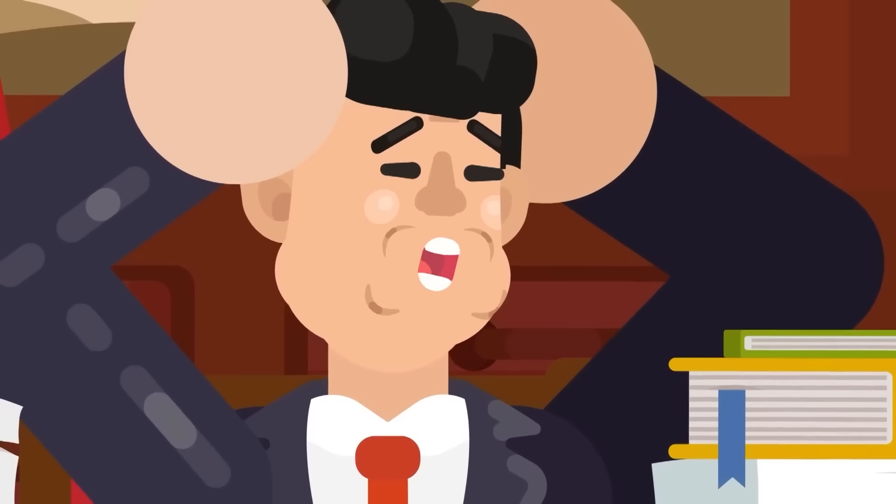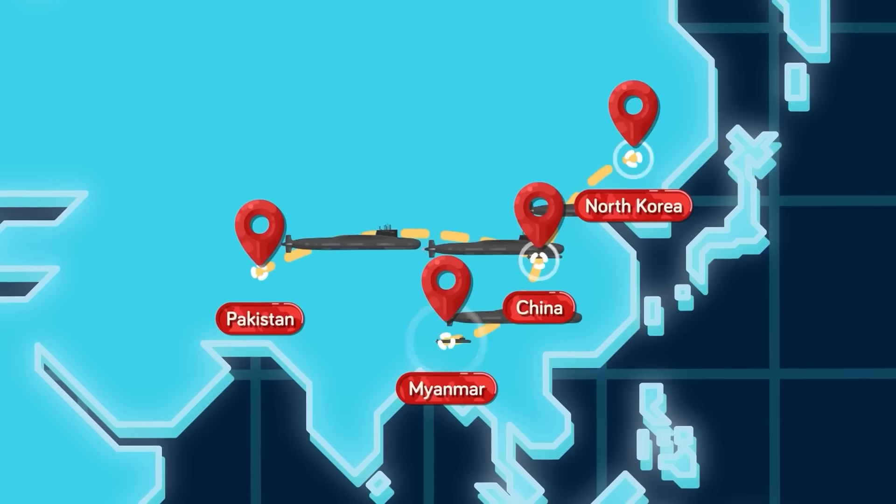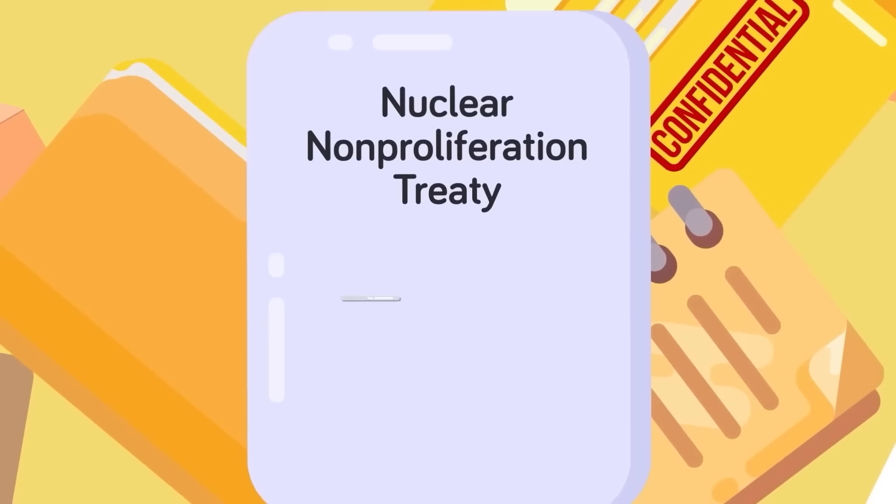The argument becomes, if the United States and Britain can break the Nuclear Non-Proliferation Treaty, why can't China? What is stopping them from exploiting the same loophole and arming Myanmar, Pakistan, North Korea, or any other authoritarian regime with nuclear-powered submarines? Let's look a little bit closer at the Nuclear Non-Proliferation Treaty and see how exactly the US and the UK got around it and how China could do the same thing in the future.